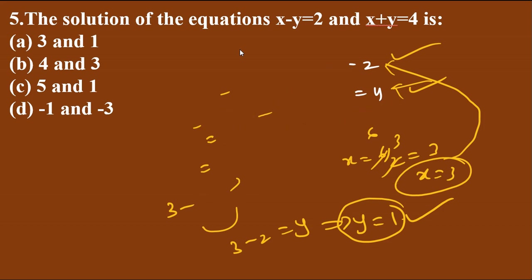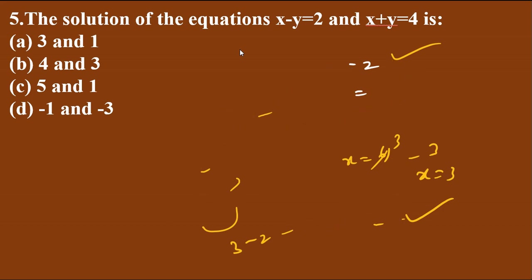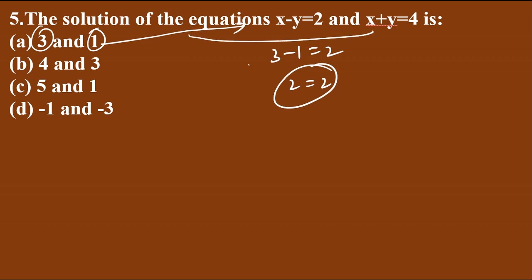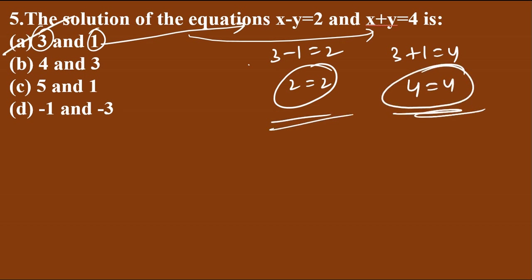Instead of solving by elimination, we can use the option substitution shortcut. Just take the x and y values from each option and substitute directly. For option one: x = 3, y = 1. Check: 3 − 1 = 2 ✓ (LHS = RHS). Then 3 + 1 = 4 ✓. Option one is correct. This shortcut is much faster than the full elimination method.